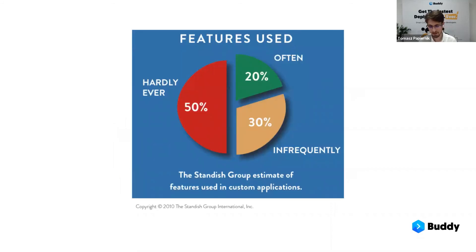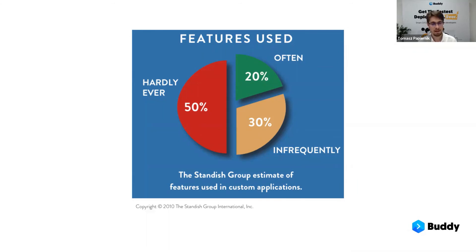This has been proven a few times already. A finding that made waves — the revelation that a lot of features in software are hardly ever used — was the 2010 Standish Group report. It's been picked apart because only a few internal apps were scrutinized, but still, this should work on your imagination: 50% of features are hardly ever used. Would you want your project to have that stat? I wouldn't want mine to have 50% features that are hardly ever used.